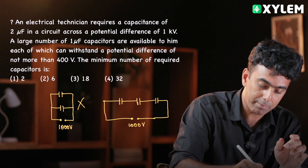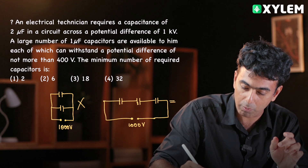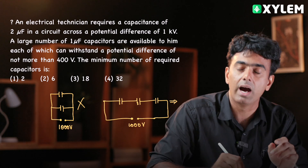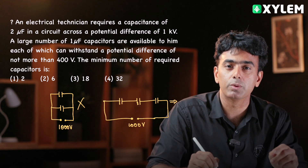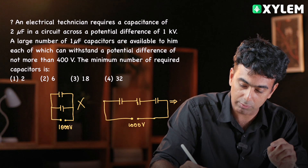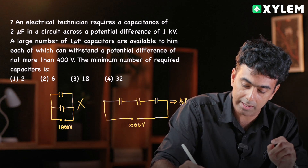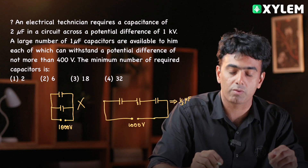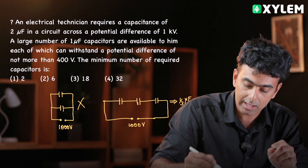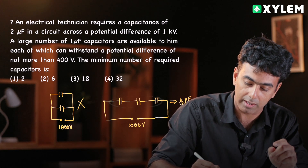The minimum one row is 3 capacitors. If there are 3 capacitors in one row, the effective capacitance is 1/3 microfarad.